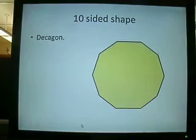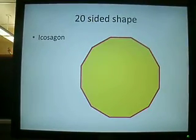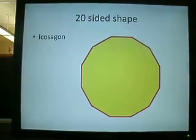Here we have a Decagon, a 10-sided shape. Here we have an Icosagon, a 20-sided shape.